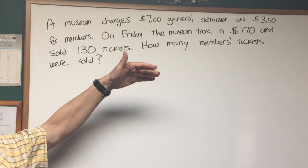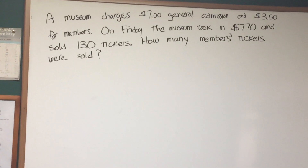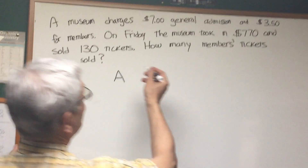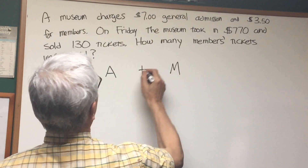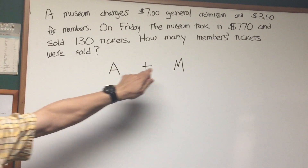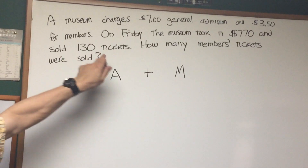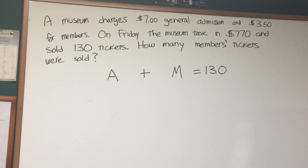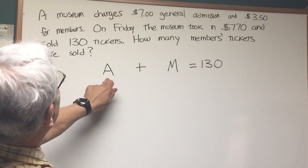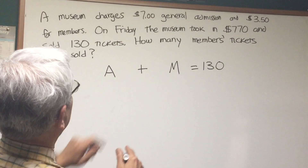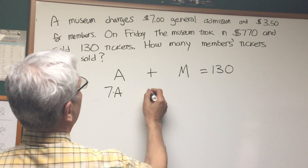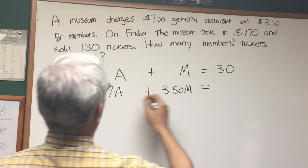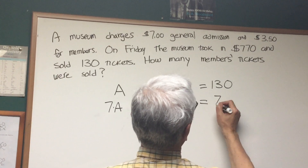We're going to do this by the technique of simultaneous equations. Let's assign the value A for general admission, and for members, let's use the letter M. We know that the number of regular admissions plus the number of members' tickets sold is 130 — the total number of tickets. Now for the value of those sales: for every general admission ticket, that was $7, so 7A. For every member's ticket sold, that's $3.50, and the total amount taken in is $770.